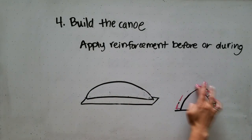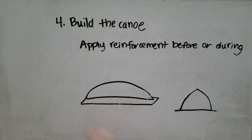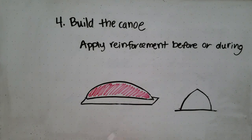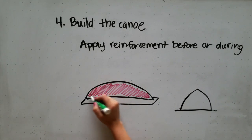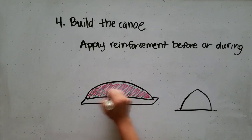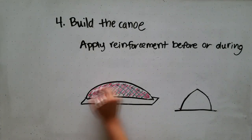However, the construction technique doesn't need to be this complex. A lot of schools just place concrete first directly on their mold, followed by layers of the reinforcing fabric or fibers, and then a final layer of concrete.